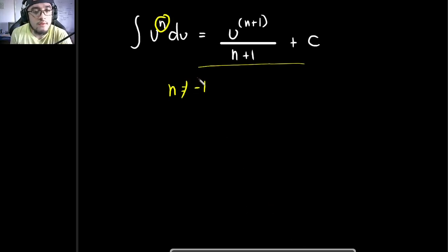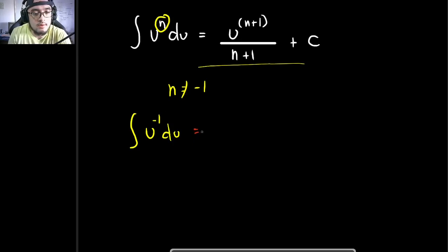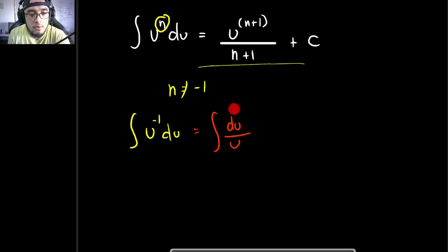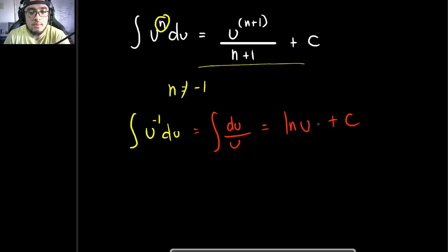So what if the value of your exponent n is equal to negative 1? In that case, the integral of u raised to negative 1 times du can be rewritten as the integral of du divided by u. This is actually equal to the natural logarithm of u plus c. So it would be as simple as this.